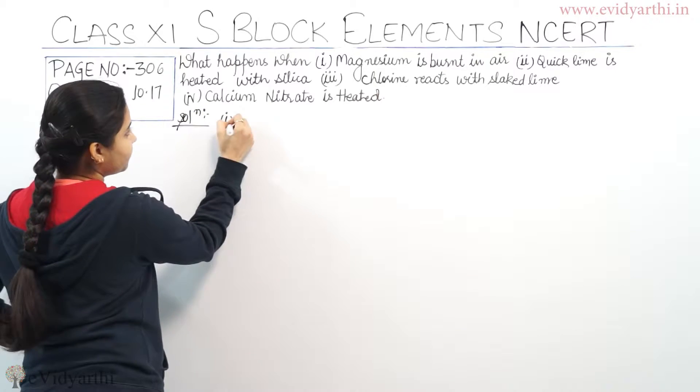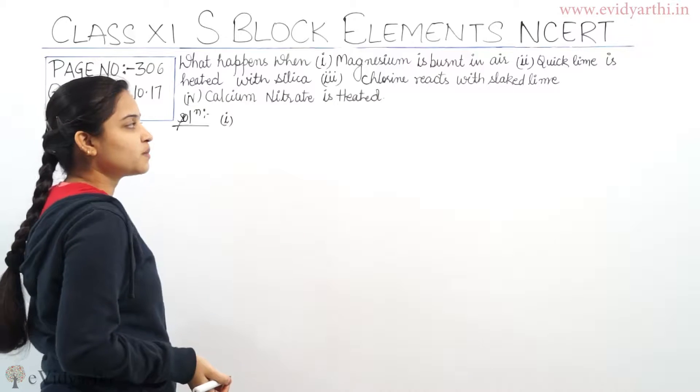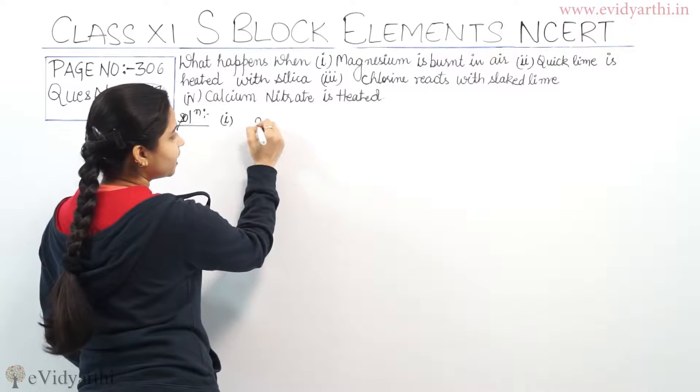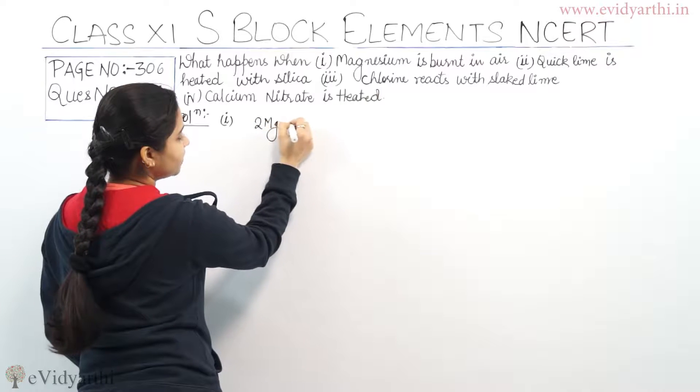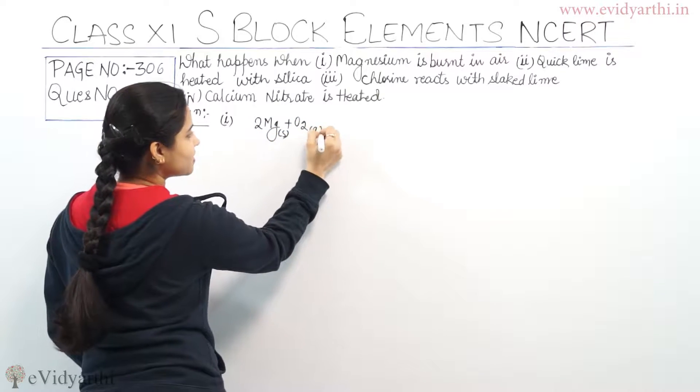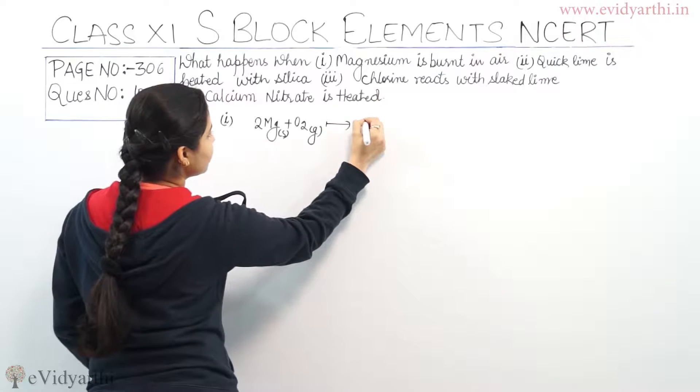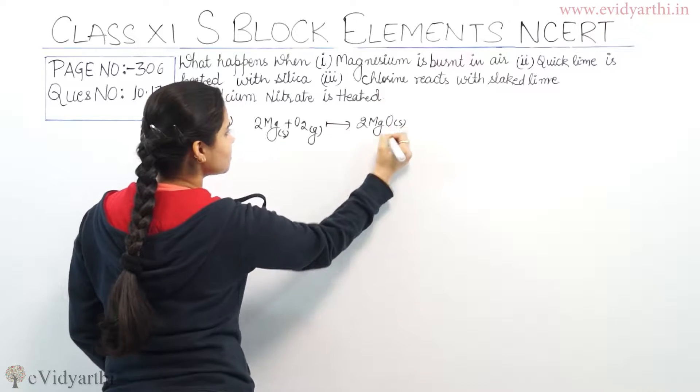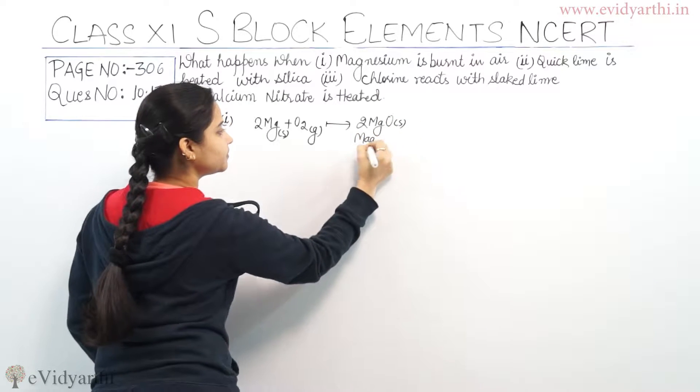First part: what happens when magnesium is burnt in air? Magnesium - 2Mg plus O2, magnesium is solid and O2 is gas. What we will get is 2MgO, magnesium oxide which is in solid state.